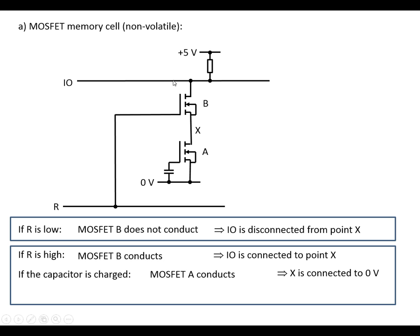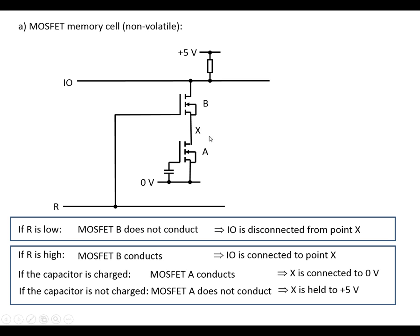So if R is high, the data line is going to be connected to 0 volts. So if the capacitor is charged, the data line is at 0 volts. If the capacitor is not charged, MOSFET B is not going to conduct, so there's no connection to 0 volts. X is going to be held at 5 volts. So if there's no charge on the capacitor and R is high, that means that the data line will be high.